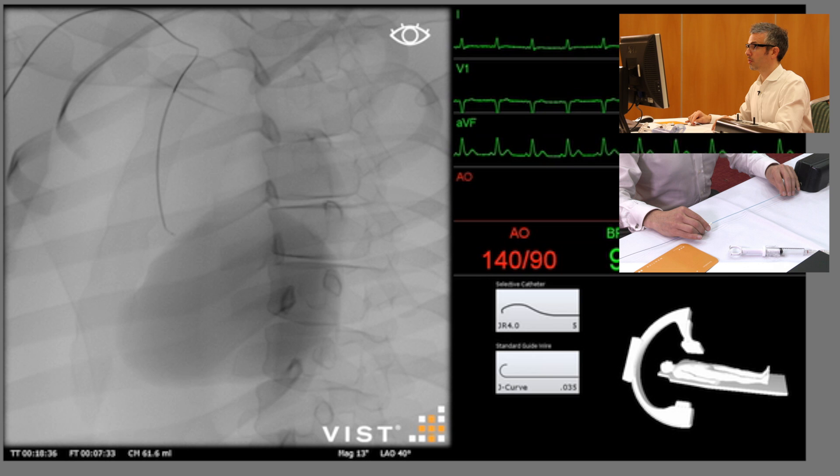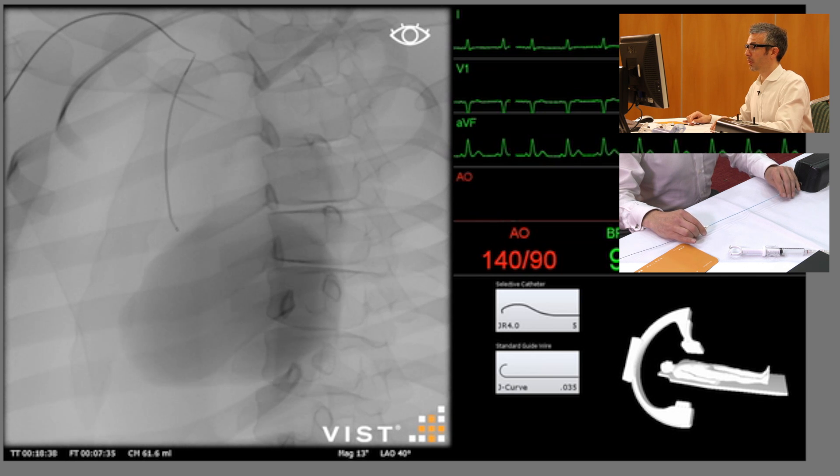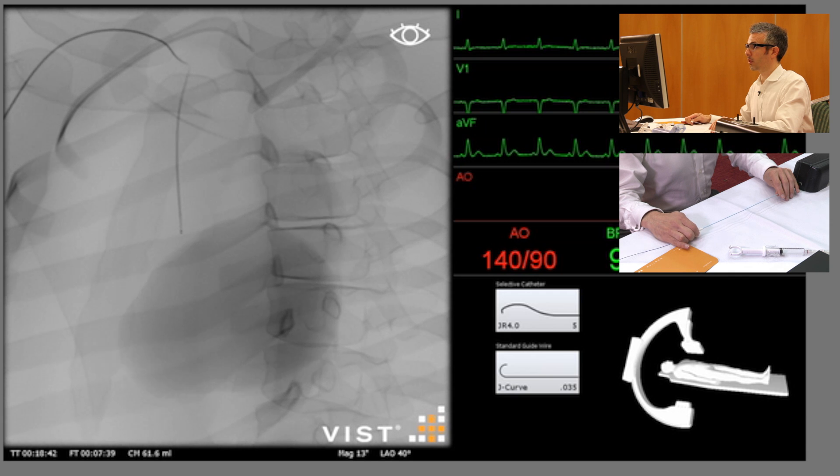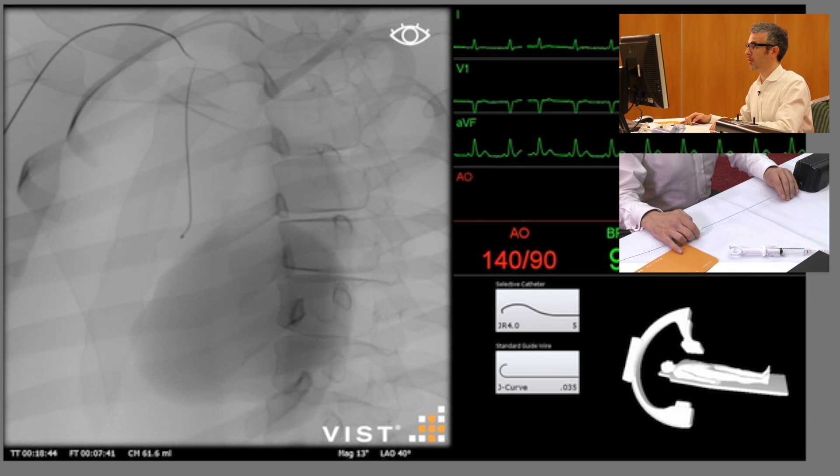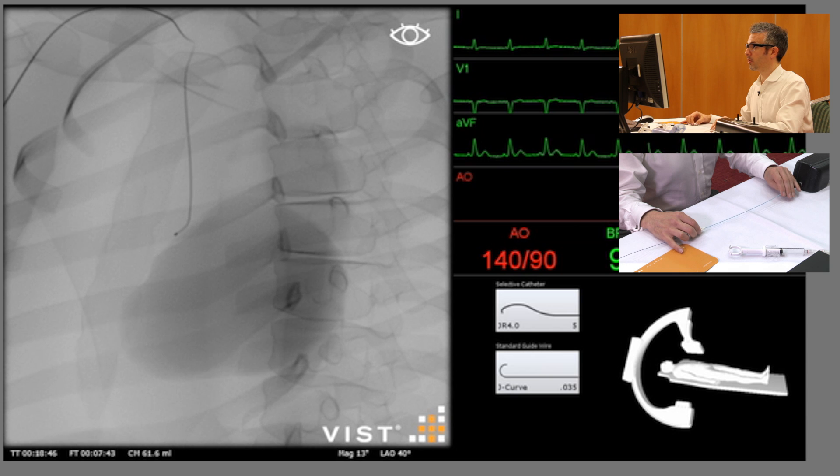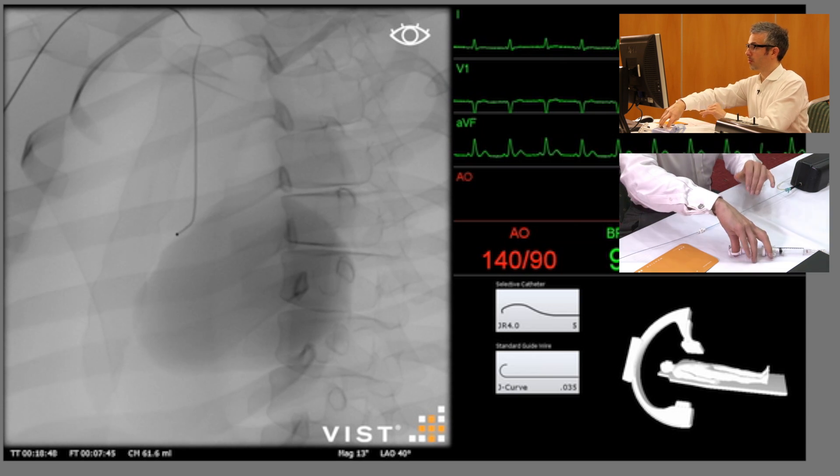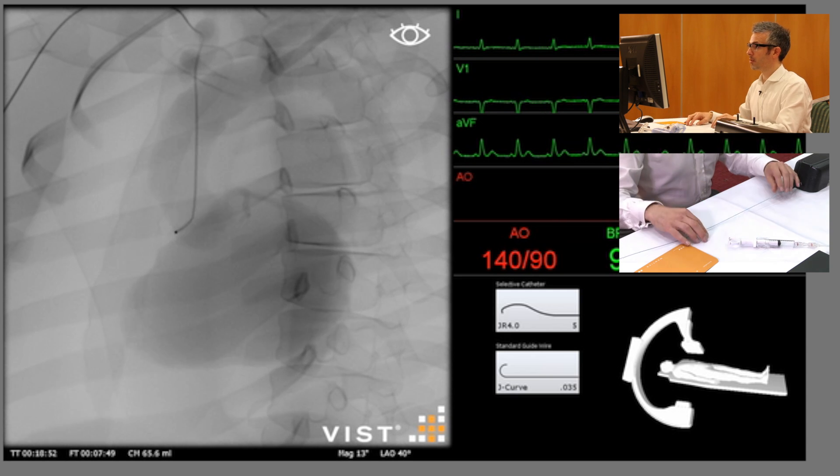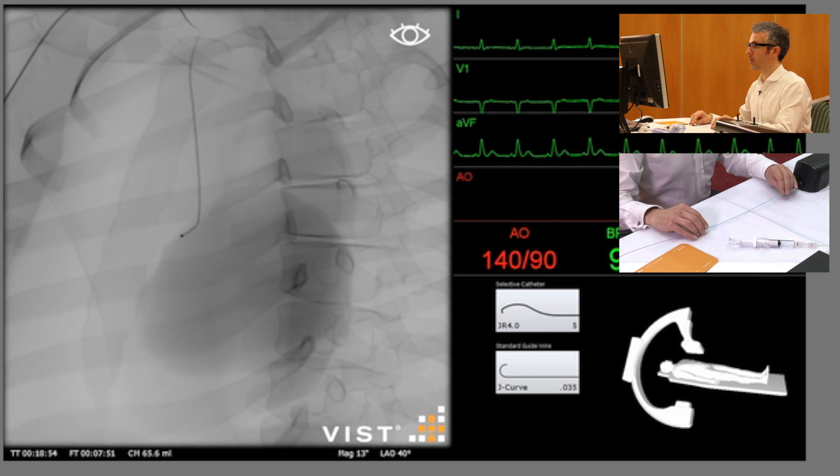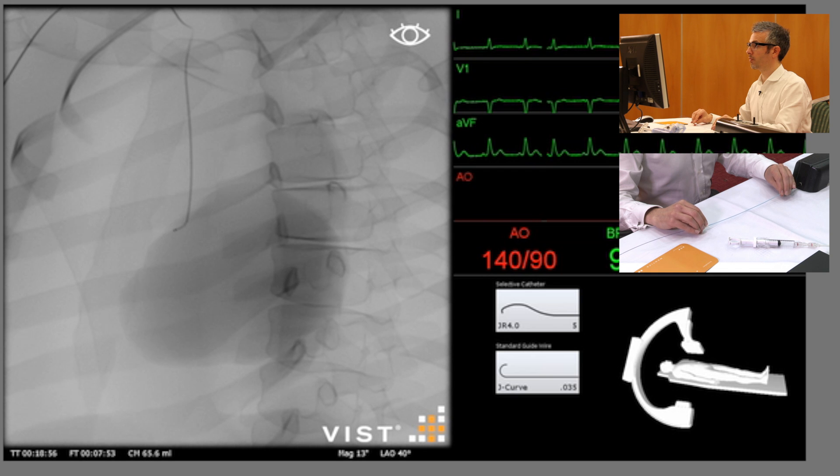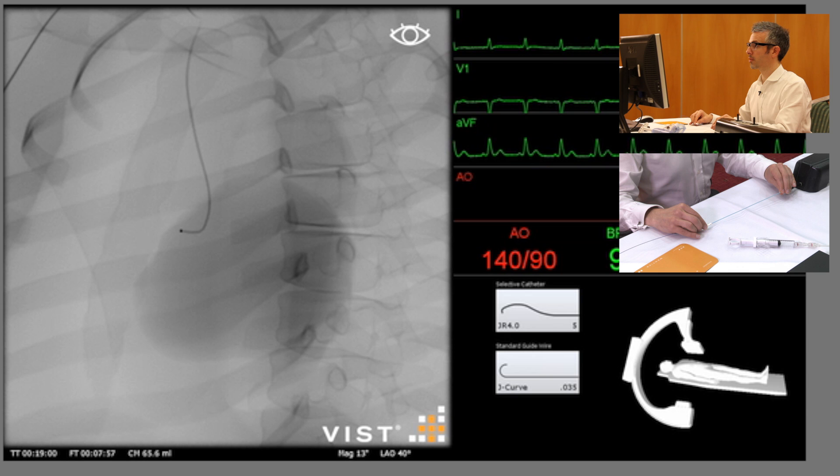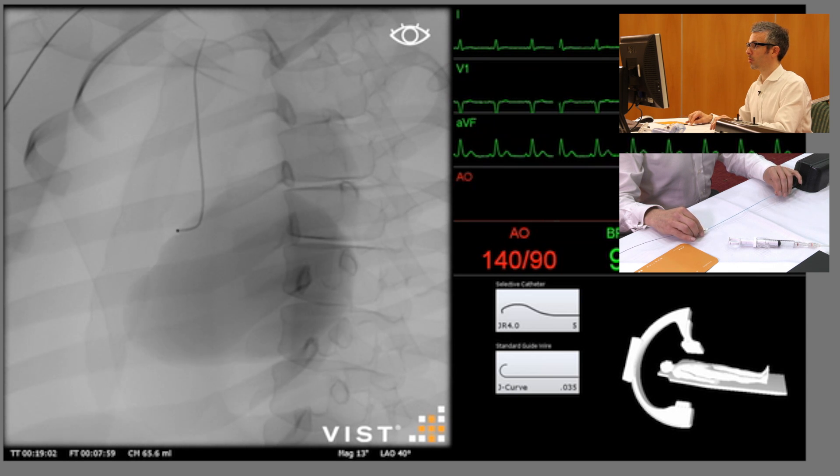So we're just going to gently torque our catheter around towards the left-hand side of the screen towards the right coronary ostium. We're looking to see a characteristic jump. Just take a small test shot here after looking at my pressure tracing. You can see we're not quite in the ostium yet. I'm just going to have to try a few little other manipulations to see whether we can get the catheter to sit just in the ostium as we want.